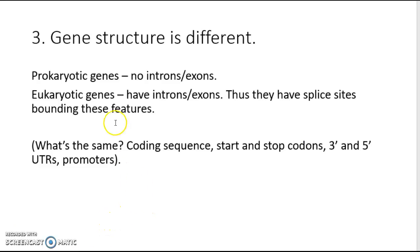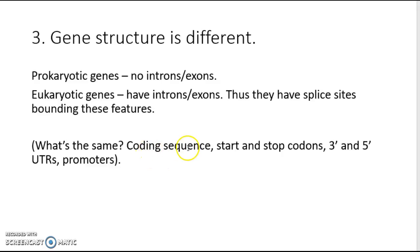Gene structure is also different. Prokaryotic genes are much shorter and simpler — they have no introns or exons, and most of the sequence except the ends is coding. Eukaryotic genes are much longer; they have introns and exons. Exons are the coding regions that encode amino acids for proteins, while introns are the non-coding spaces in between, bounded by splice sites. Both prokaryotic and eukaryotic genes have coding sequences, start and stop codons, 5' and 3' untranslated regions, and promoter sequences for transcription.